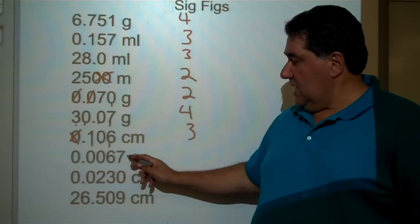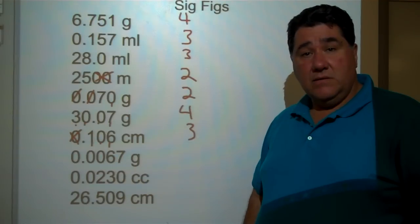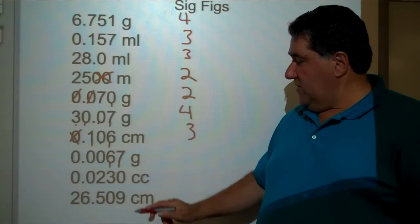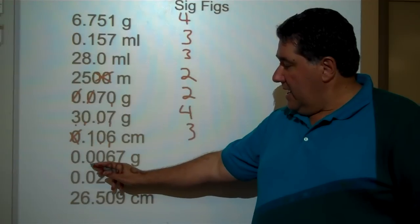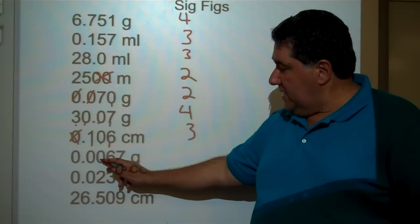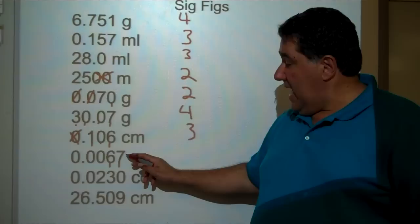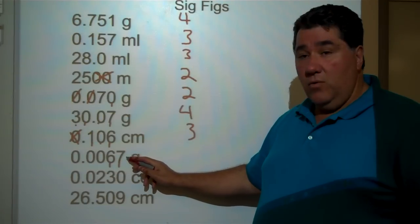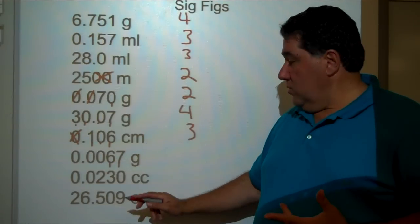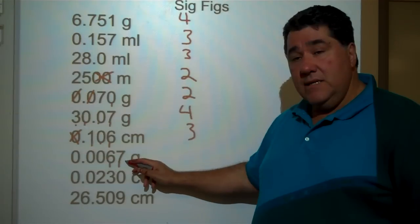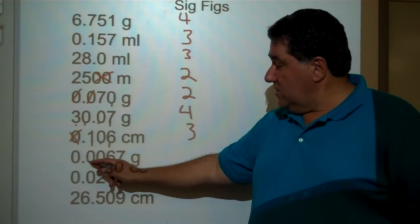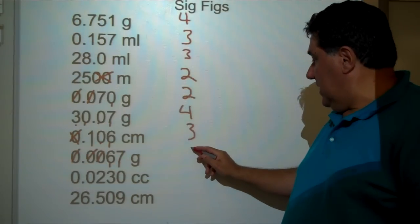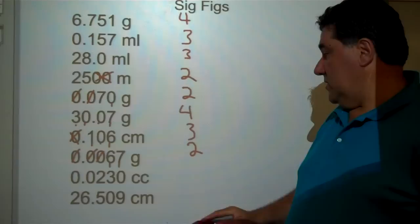0.0067 grams. We know the six is significant and the seven is significant. Even though there is a decimal point, these leading zeros are not at the end of the number. By rule one, six and seven count. By rule two, there are no ending zeros at the decimal point. These zeros do not fall between two significant digits, so there are only two significant figures.